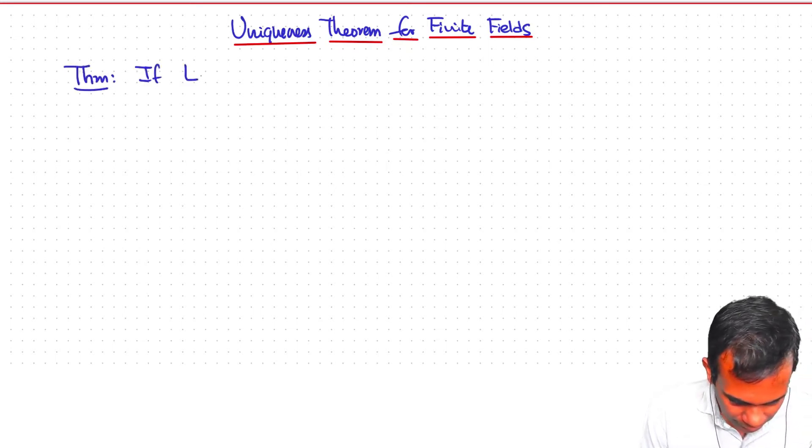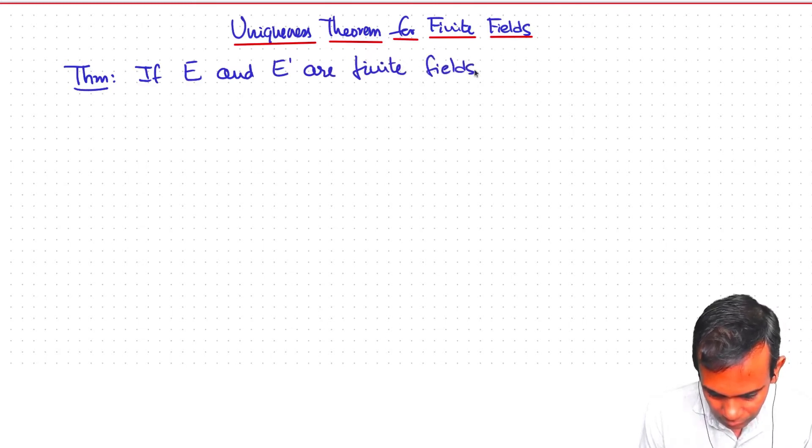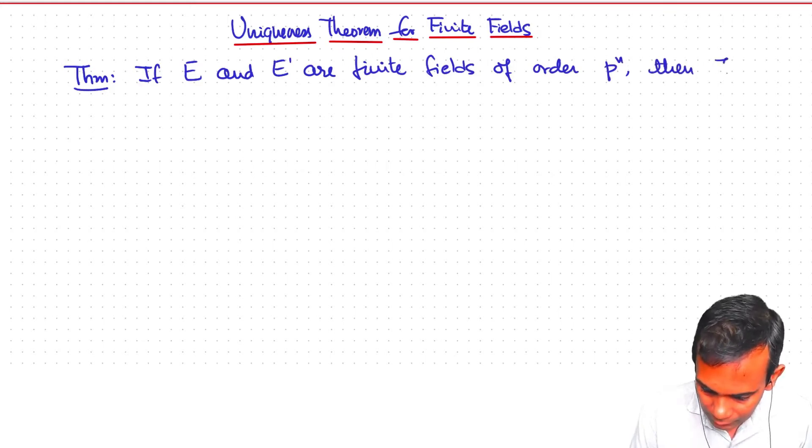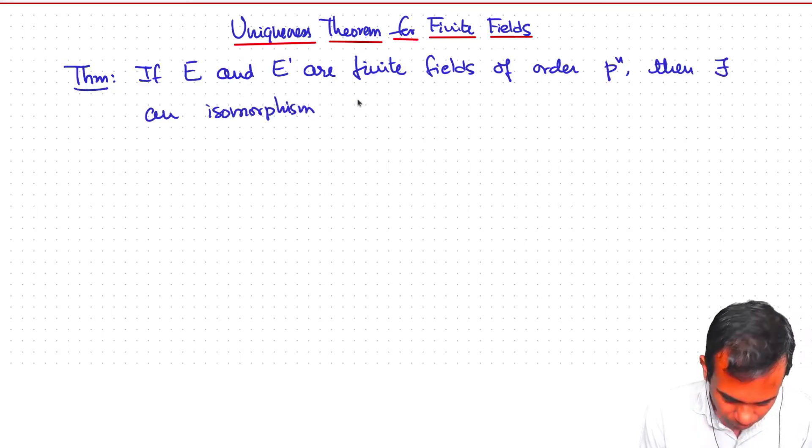If E and E prime are finite fields of order p to the n, then there exists an isomorphism from E onto E prime.